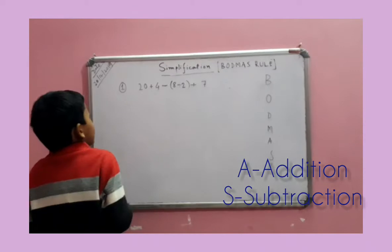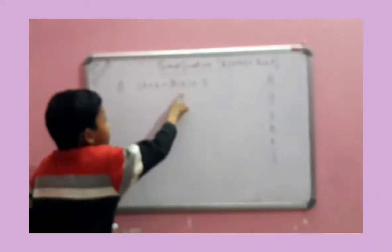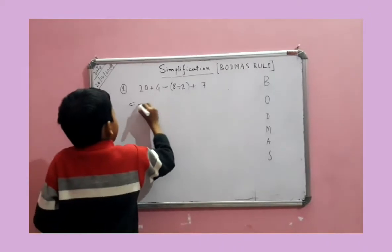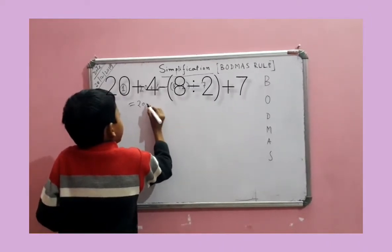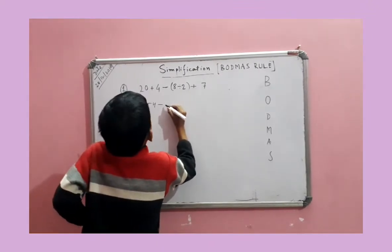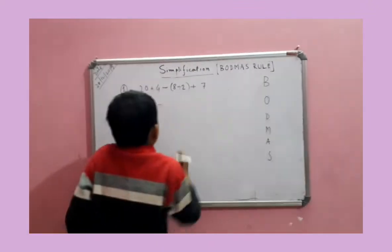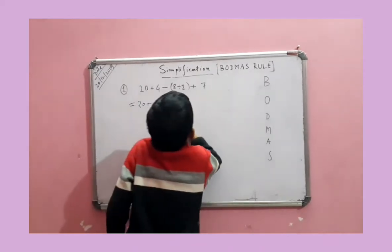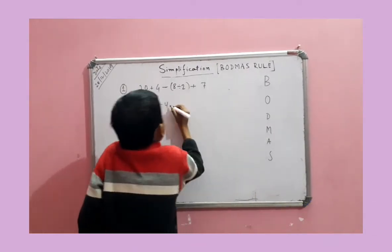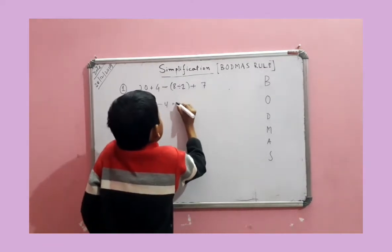I have this. First we have to do some brackets. Let's do it. 20 plus 4, minus 4. Okay, I will do my best. Minus 4, minus 4 plus 7.